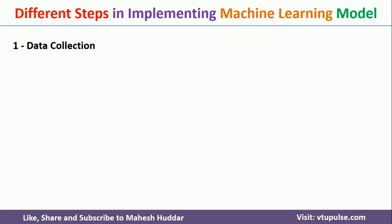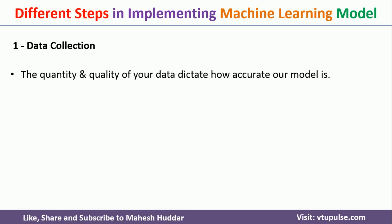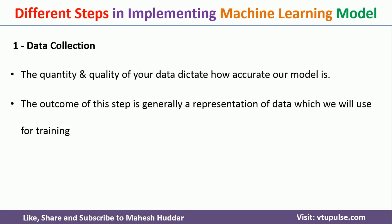The first step in machine learning model building is data collection. Data collection is one of the most important steps of any machine learning project because without data you cannot train your model. The collected data should be as large and high quality as possible. If that data has a lot of errors, you may not be able to get a good machine learning model. The outcome of this step is a general representation of the data used for training and testing the model.